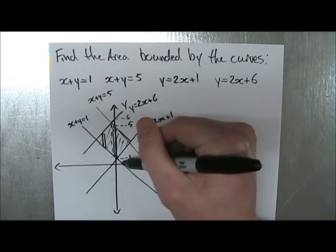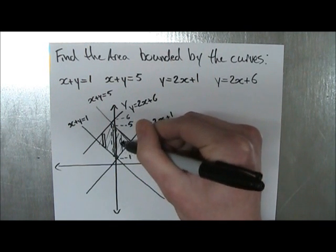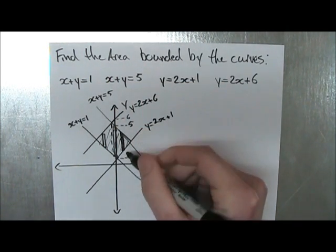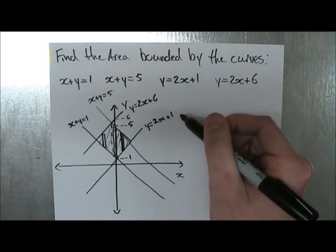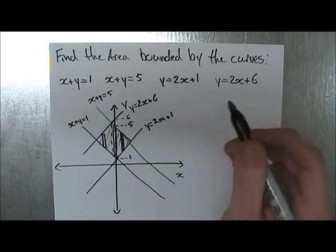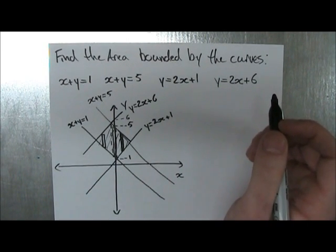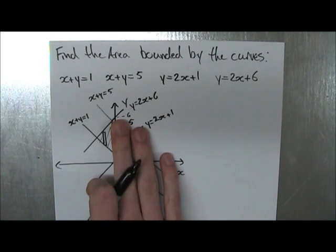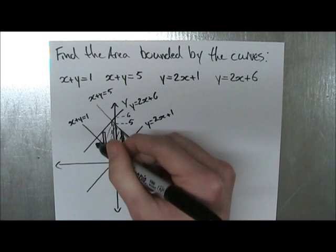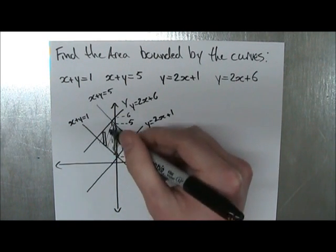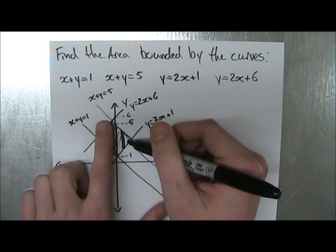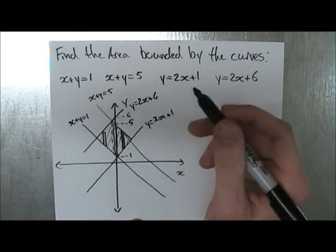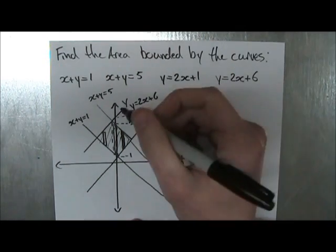And then after, once it gets past this line, it's going to start touching these two functions. If we draw a rectangle here, the top touches x plus y equals 5, but now the bottom touches our other function, 2x plus 1. So to solve this, we actually have to add a bunch of different integrals to get the total area. This should make sense because we write each integral as the upper function minus the lower function over each sub-interval, and we have three different areas.